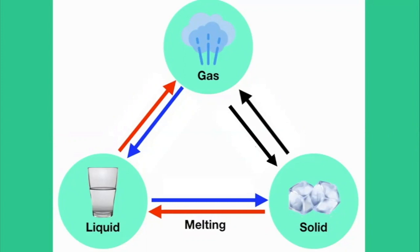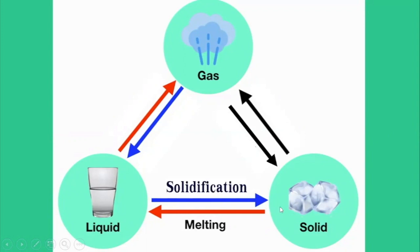When a liquid is cooled until a certain level, it may change its state from liquid to solid. So if we decrease temperature and we have liquid and we want to get solid from liquid, we decrease heat and we get solid from liquid. This physical change is called solidification.